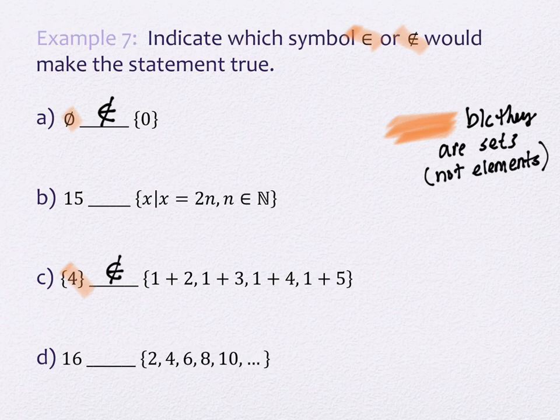Now, B and D, those are elements. 15 and 16, you don't have any curly braces around them. They are elements. What the question is that you ask second, then, is are they elements of what's described on the other side? Okay. So let's look at B. Any idea what this notation is saying?